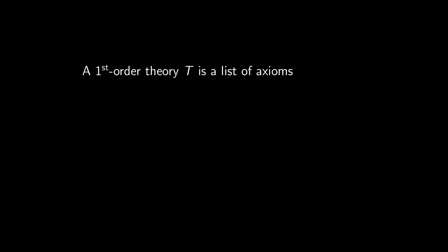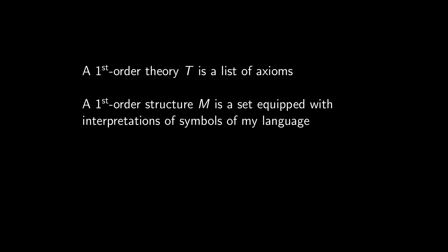Now, we can take a bunch of axioms, put them together, and call it a theory. Then we can take a set and equip it with interpretation for the language and call that a structure. And if we have a structure for which all axioms in the theory are true, we call it a model, and rewrite it with this funny little symbol.